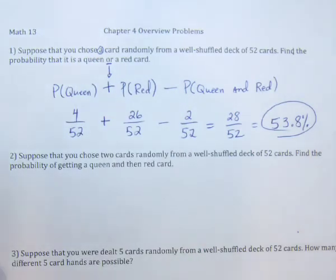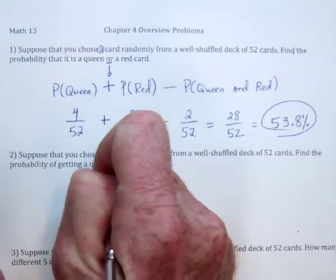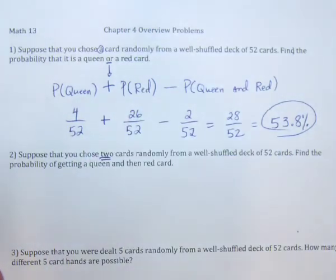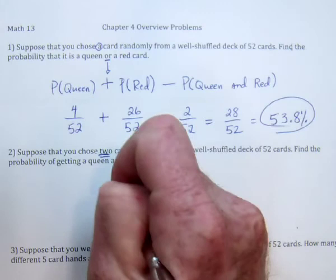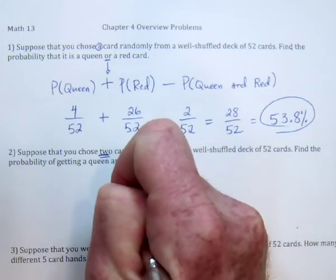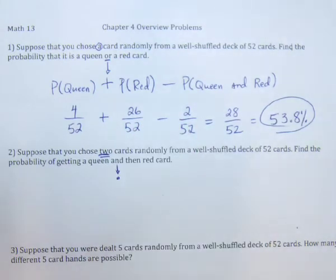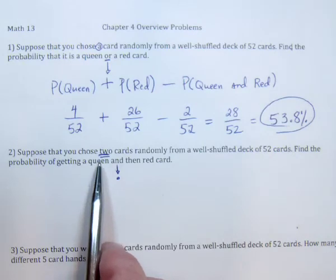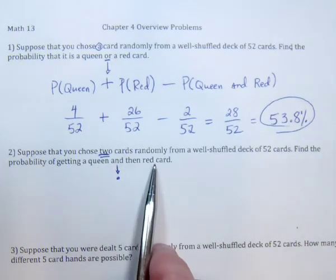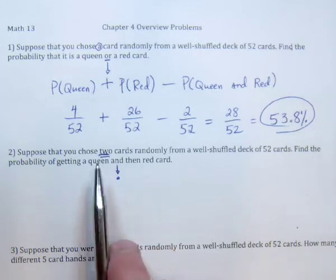All right, next up. The difference here is now it's going to be two cards. You get a first one that's a queen — that 'and' means we're going to multiply. But like the last problem, we have to consider: if this one's a queen, what if it was the queen of hearts?